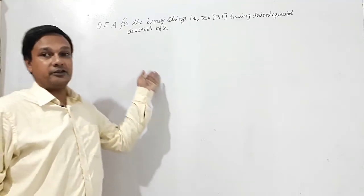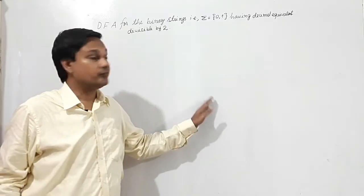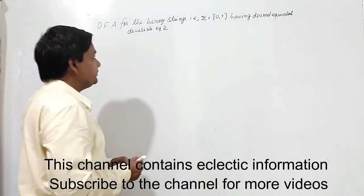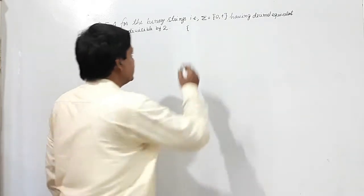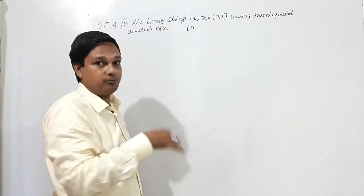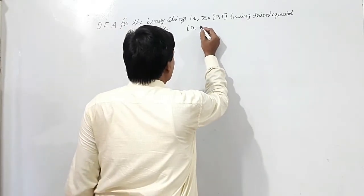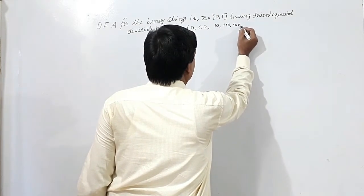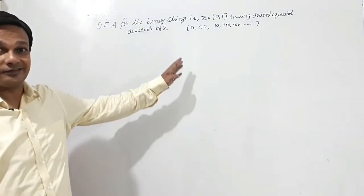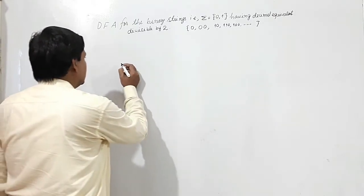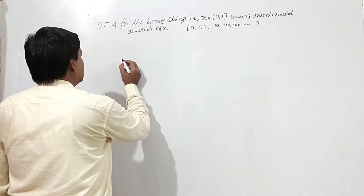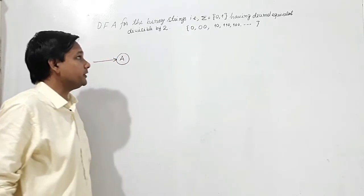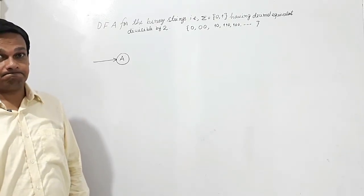We need to construct a DFA for binary strings where sigma is given as {0, 1}, having a decimal equivalent divisible by 2. If the decimal equivalent is divisible by 2, the valid strings may be 0, or sets of zeros like 0,0,0 — also strings like 10, 110, 100, and so on. These are the strings that should be accepted.